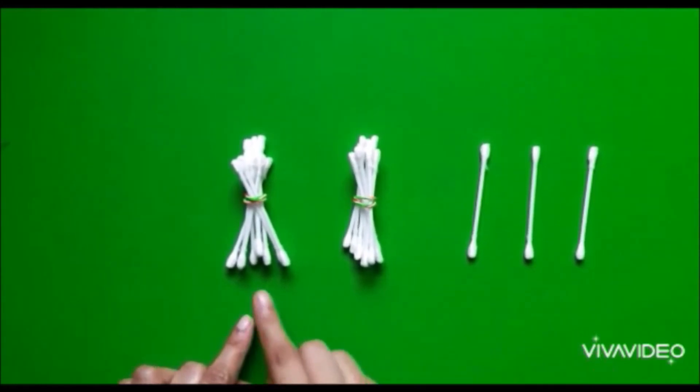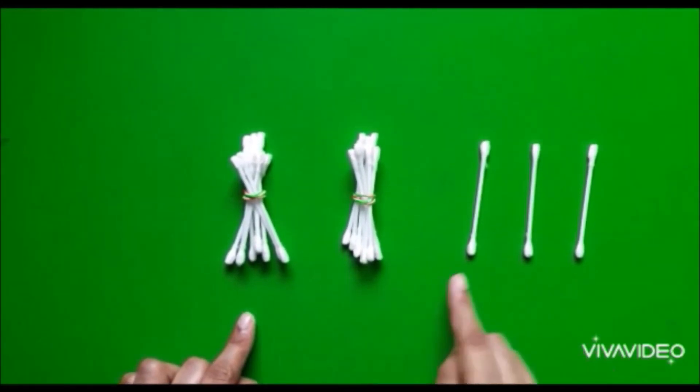Now, total number of earbuds. Total number of earbuds are 2 tens equals to 20 plus 3, which equals 23.